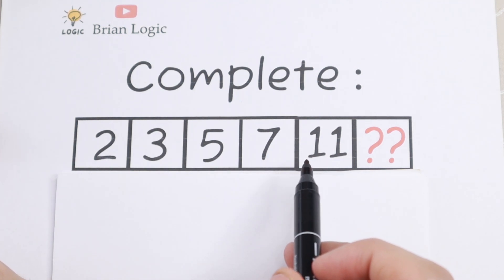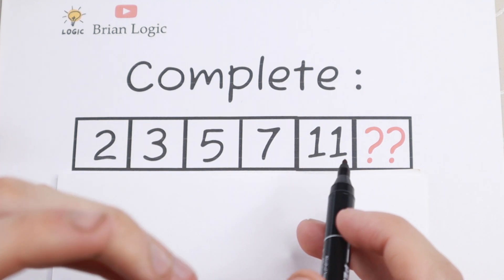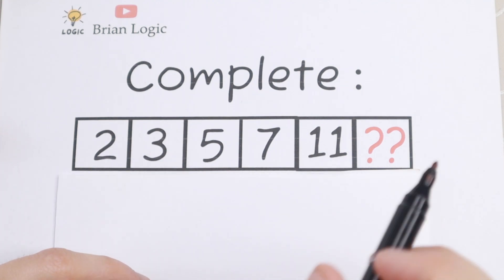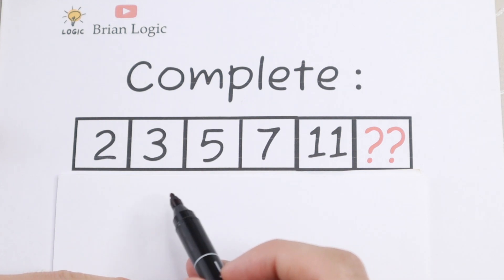This is a really interesting numeric series because 2, 3, 5, 7 and 11 are also known as prime numbers. So what is a prime number? This is a whole number greater than 1 whose only factors are 1 and itself.